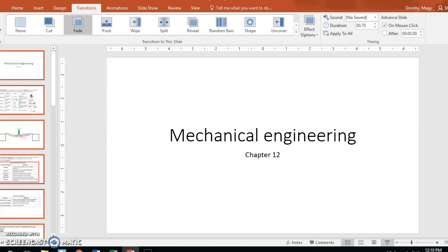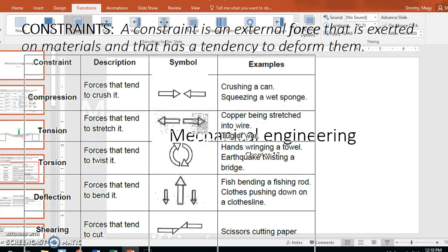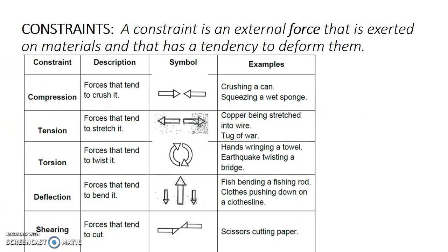Welcome to Chapter 12: Mechanical Engineering. We can start off by talking about the different constraints — another term for constraints are forces. These have been mentioned already in the past couple of years, so you already know a lot of these. Just a reminder that the arrows for forces are always thicker arrows, as opposed to movement arrows that are thinner.